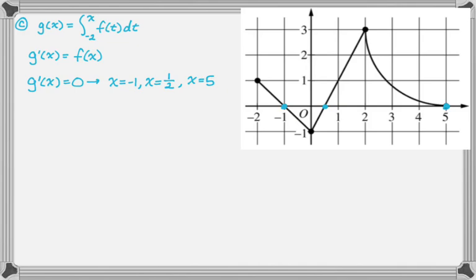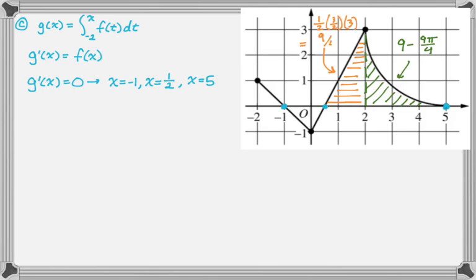I'll find some regions from the graph. The first region, from part A, is nine minus 9π over four — a square minus a quarter circle. The next region is a triangle with base three-halves and height three, giving an area of nine-fourths. The following triangle has base three-halves and height negative one, giving negative three-fourths. And then there's a triangle with an area of one-half.